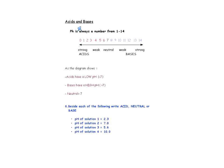We measure acids and bases by their pH, which always ranges from 0 to 14. Acids have a low pH — less than 7. Bases have a high pH — anything over 7. If it's exactly 7, it's neutral.